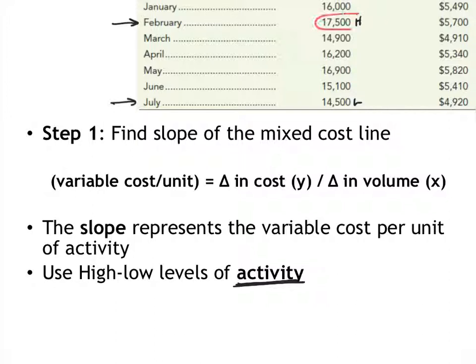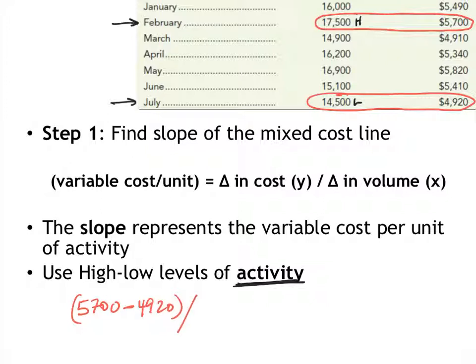So the change in cost, we're looking at these two points here, the high and the low points. The cost at the high point was five thousand seven hundred dollars. The cost at the low point was four thousand nine hundred twenty dollars. Now remember when I say high and low points I'm talking about activity level not necessarily cost because they don't always correspond, divided by the change in volume of these two points. So the high volume was seventeen thousand five hundred and the low volume was fourteen thousand five hundred. So when you do the math here you should get zero point two six dollars per mile being my variable cost per unit or the slope of our cost line.